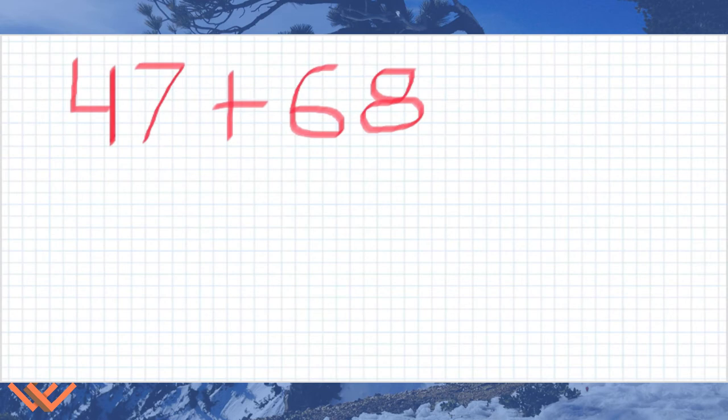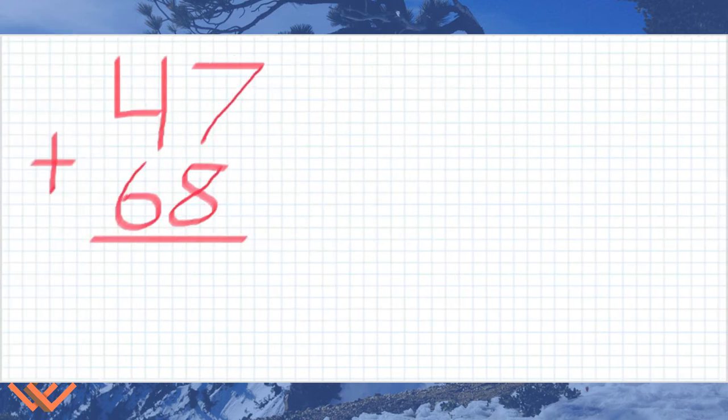We're going to do vertical addition. But wait, it's not vertical. We have 47 plus 68. That's the same as 47 plus 68. But we're not doing the standard algorithm first. We're going to do vertical addition. So if you recall, we have these ones here. So it's seven and eight ones.